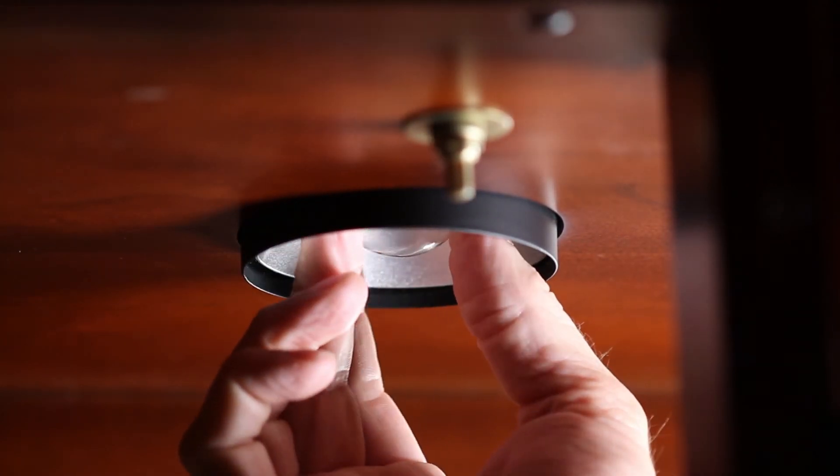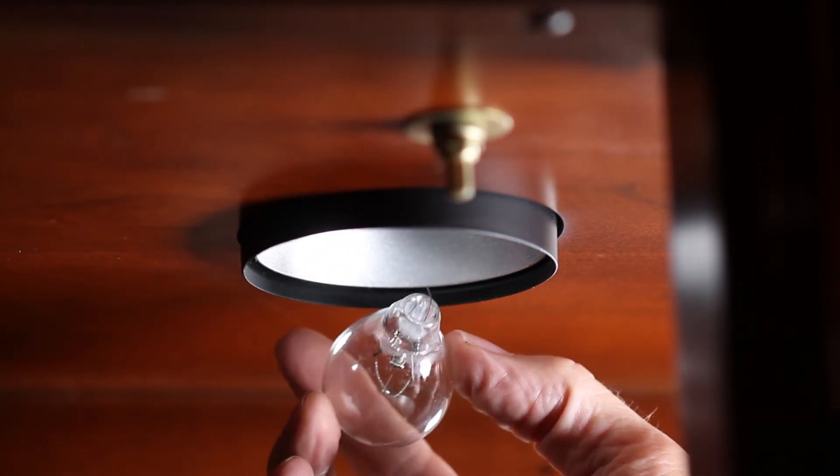So here you are trying to replace a light bulb and the bulb snaps off from the base. What do you do?